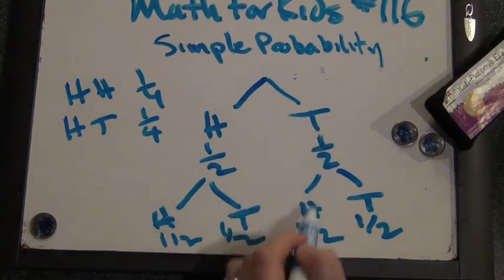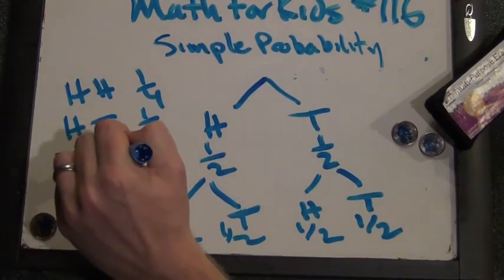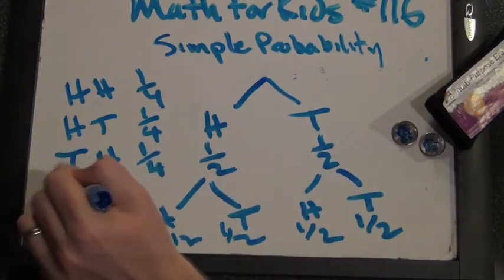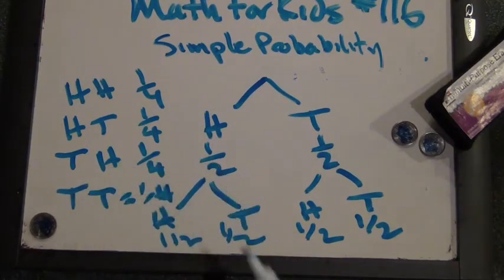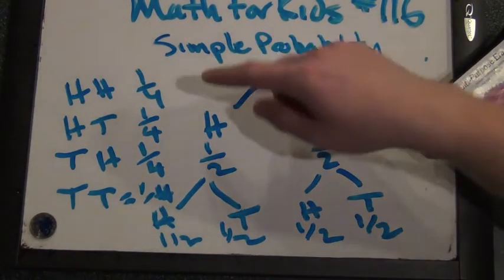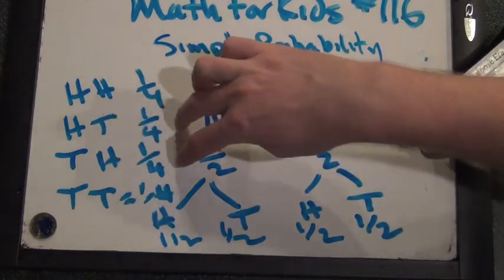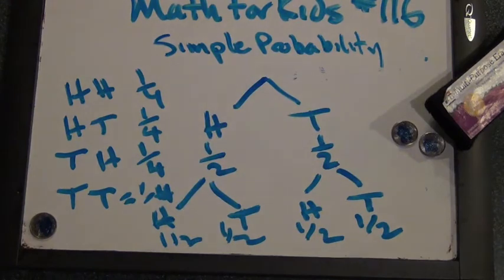Tails-heads is half of a half. And tails-tails is one-fourth. So it looks like two heads are gonna come up about a quarter of the time. Heads-tails is gonna come up about half the time. And tails-tails is gonna come up about a quarter of the time.